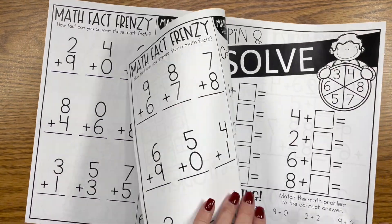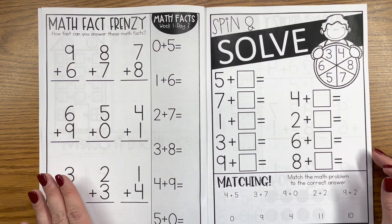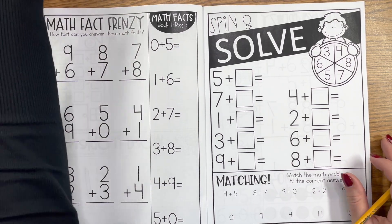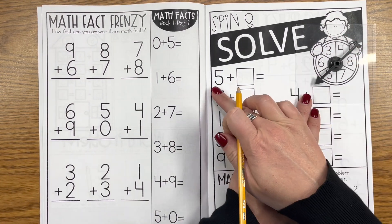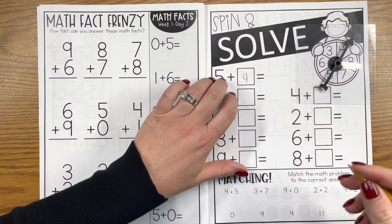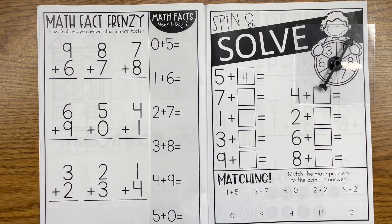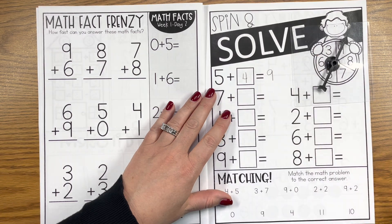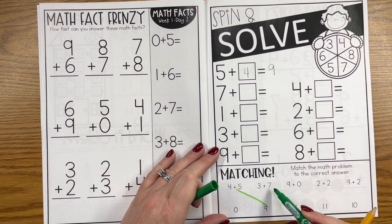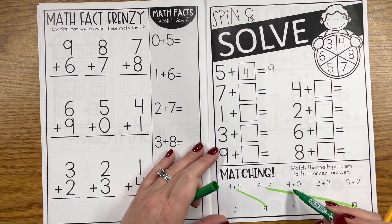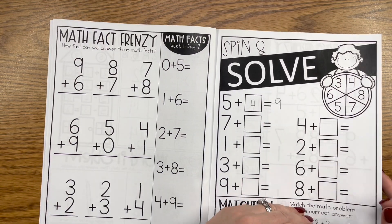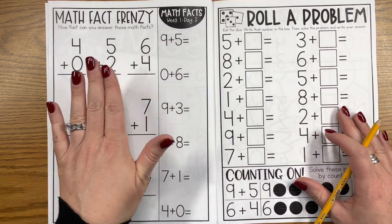On day two, once again you'll do your math facts in whatever strategy or whatever way you want your students to use. Then we're going to use a spinner. With this we'll have 5 plus and we'll spin and get 4, so we would write 5 plus 4, use our hundreds chart, use our number line, use our fingers, use our touch points, whatever way we want to figure out 9. On day two I also like to use a marker for matching. You could also have your students just use a pencil, whatever you would like them to do, but anytime we can use markers or highlighters our kids love it.